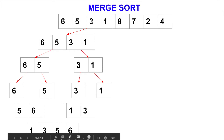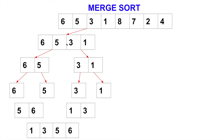This first half is done. In actual code, it's going to be recursive code — we'll run the code in just a few seconds. Now we come back to the visualizer for the second half: 8, 7, 2, 4. We have to deal with this.